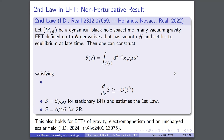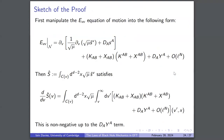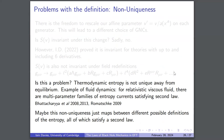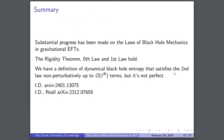In summary, there's been substantial progress on the laws of black hole mechanics. In gravitational effective field theories we now have proofs of the rigidity theorem, the zeroth law, and the first law. Harvey and I have a definition of dynamical black hole entropy that satisfies the second law non-perturbatively up to order ℓ^n terms, though its geometric interpretation is still somewhat lacking and it has coordinate variance issues at eight or more derivatives. These are discussed in detail in two papers.